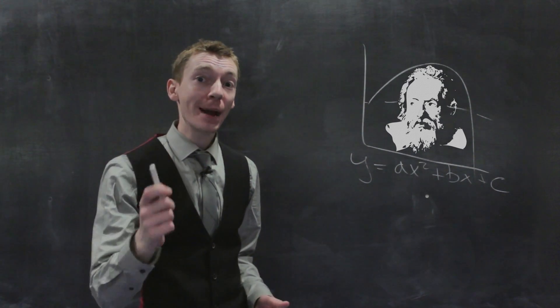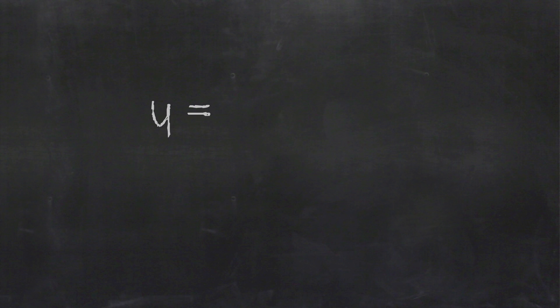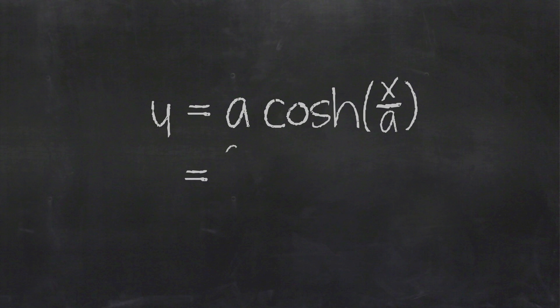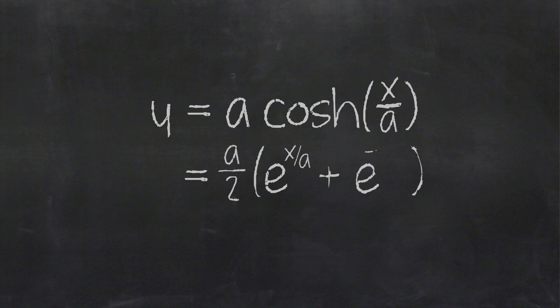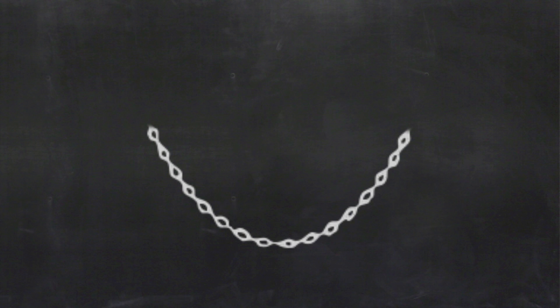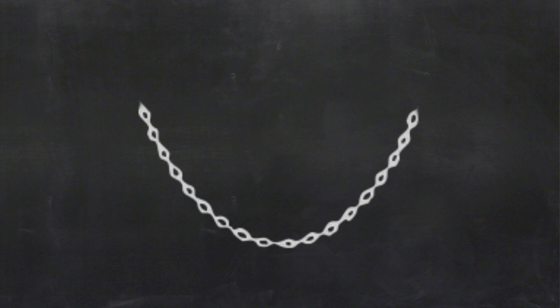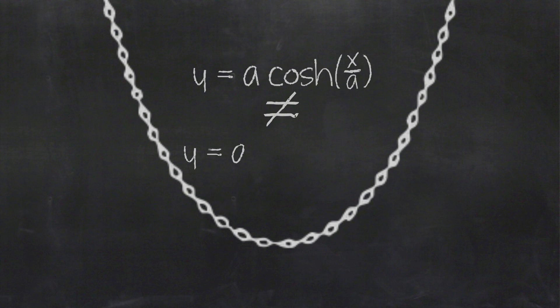Galileo realized that the curve of a free hanging chain was very similar to a parabola, but something was amiss. The mathematical description of a catenary is actually quite different. It is y equals a cosh(x/a), which equals (a/2) times (e to the power x/a plus e to the power minus x/a). The curve changes as the distance between the two ends and the length of the chain changes, but they can be described with the same formula, and are never parabolas.